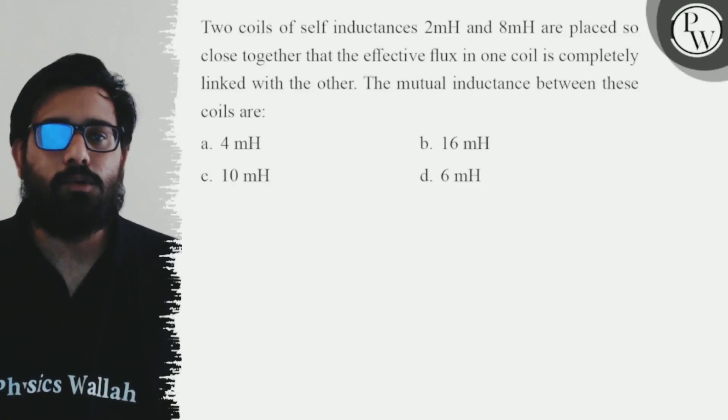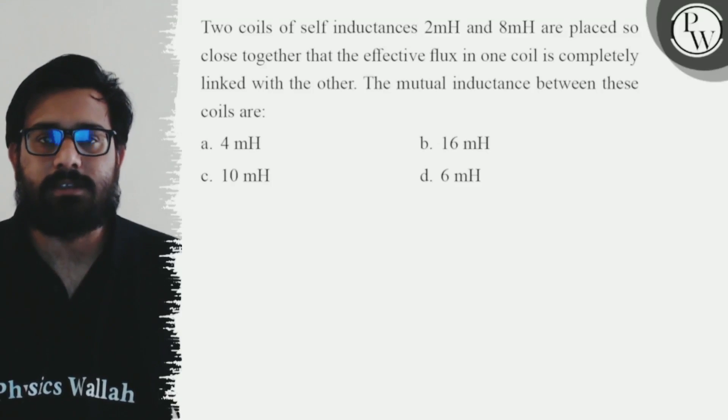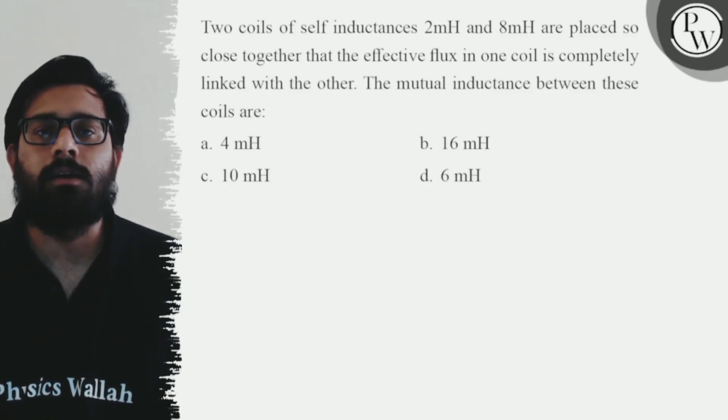Hello Bachos, let's see the question. Two coils of self-inductance 2 mH and 8 mH are placed so close together that the effective flux in one coil is completely linked with the other.